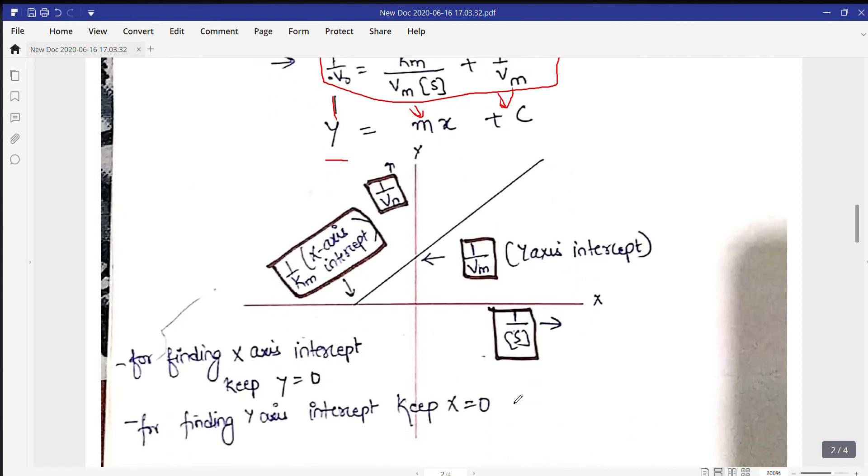Now put it like this. So we know that Y is present at V0. So on the Y axis we have 1 upon V0, while on the X axis we have 1 upon S. And this is an intercept - that is 1 upon Km for X axis and 1 upon Vm for Y axis.